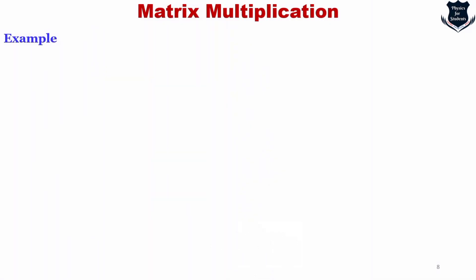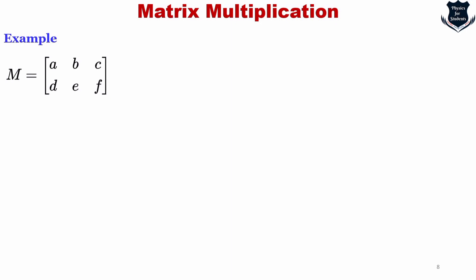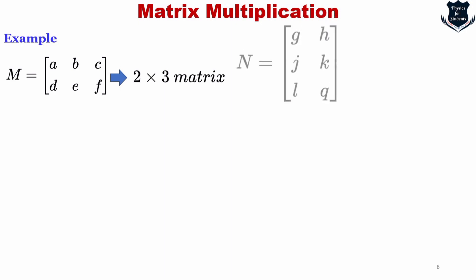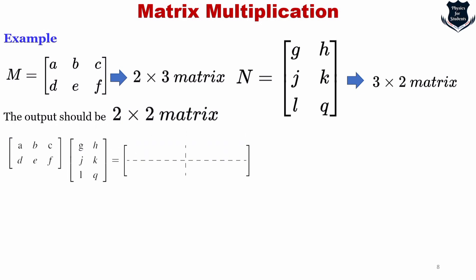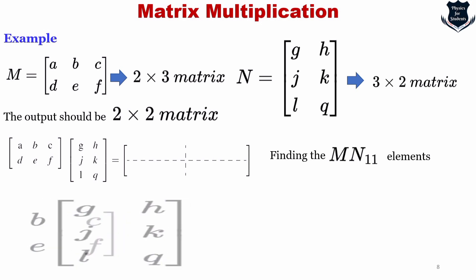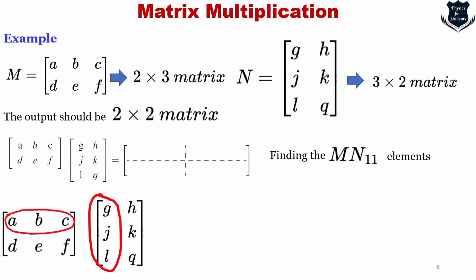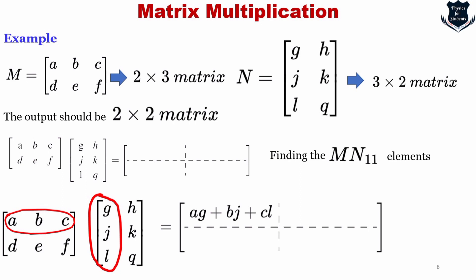Although the definition can be a little confusing and abstract, let us explain it through an example. Take matrix M with elements A, B, C, D, E, F — a 2×3 matrix — and matrix N which is a 3×2 matrix. We expect the result of the multiplication to be a 2×2 matrix. To find element (M·N) sub 1,1, we take the first row of M — A, B, C — and compute A·G plus B·J plus C·L.